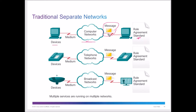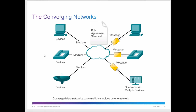Don't think of the message as an actual email — we're talking about information being sent back and forth. Traditionally these were separated: phones had their own lines, computer networks had their own lines, and then broadcast networks handled things like television or video conferencing. In the new converged network approach, we integrate everything into one common network with a rule agreement standard so everything can go through.